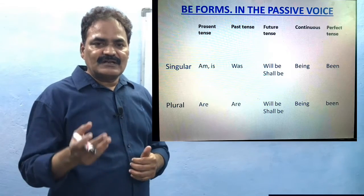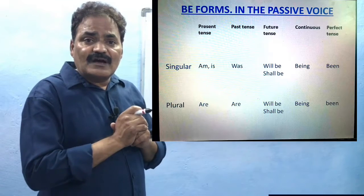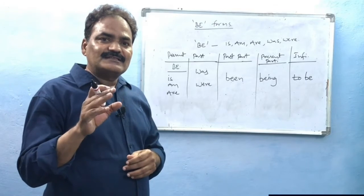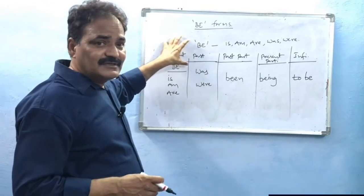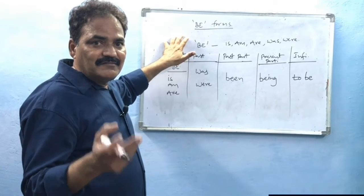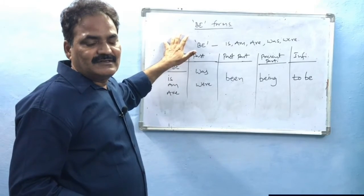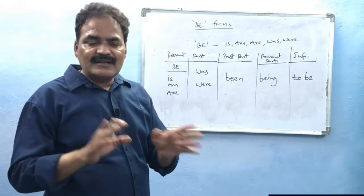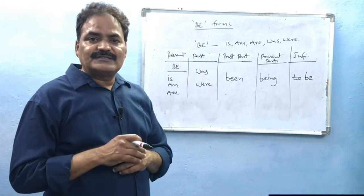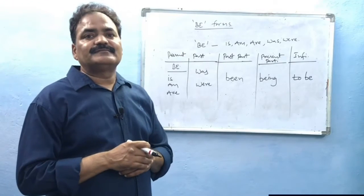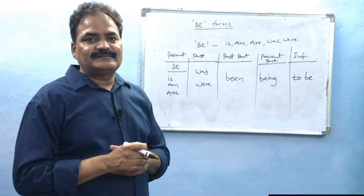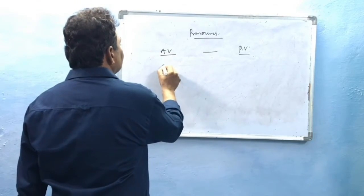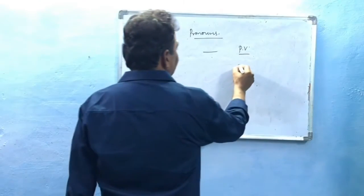Before that, let us see how some pronouns change in passive voice. In the three changes we have seen, the subject word becomes the agent with 'by' at the end of the sentence in passive voice. When nouns come in the place of subject, they will not change — they remain as they are. But when pronouns come, they change a little bit. In active voice when 'I' comes, it changes to 'me' in passive voice.